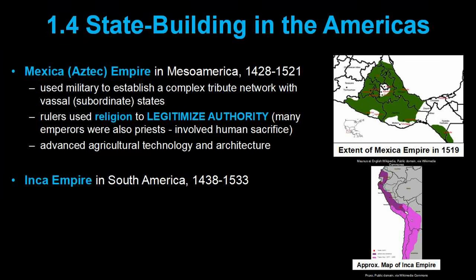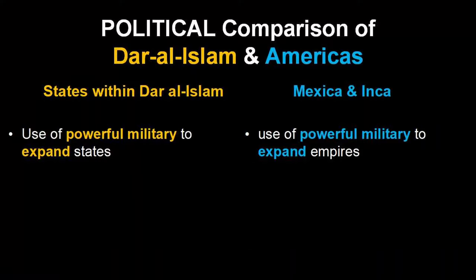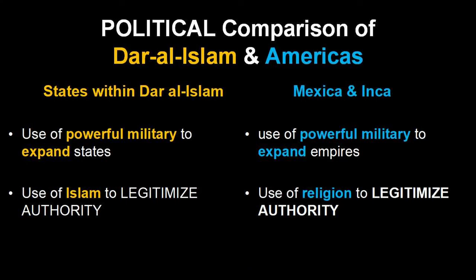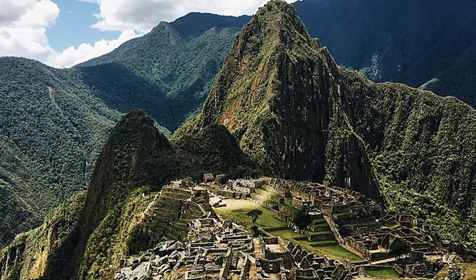The Inca in the Andes Mountains of South America were also highly sophisticated and included a diversity of peoples. Like the Mexica, the Song, the Abbasids, and those Turkic states, the Inca also sponsored large infrastructure projects, most famously their roads, which were critical for uniting and ruling their vast empire. The Inca empire was largely built through military conquest. Like all these other states, the Inca also used religion to legitimize their rule, as Inca rulers were closely associated with the sun god, and they also built some pretty amazing architecture.